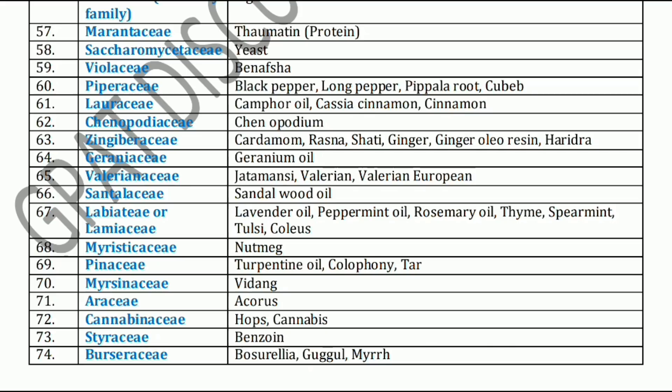Next, Myristicaceae family. Myristicaceae family has the plant Nutmeg. Next, Pinaceae family. Pinaceae family has Turpentine oil, Colophony, and Tar. Next, Myristicaceae — Vidang. Next, Araceae family. Araceae family has Acorus.